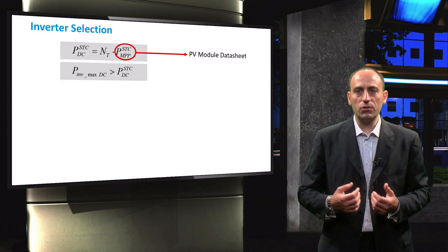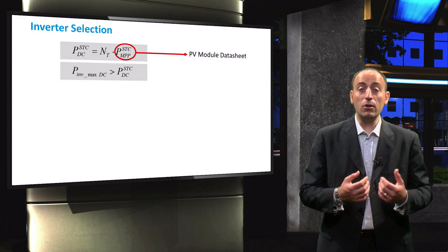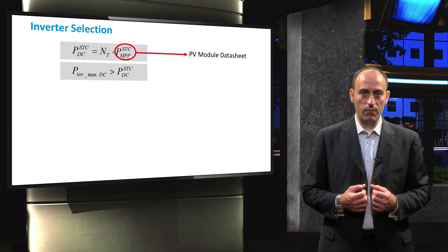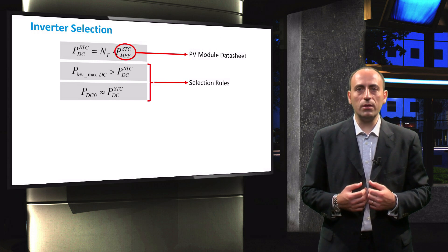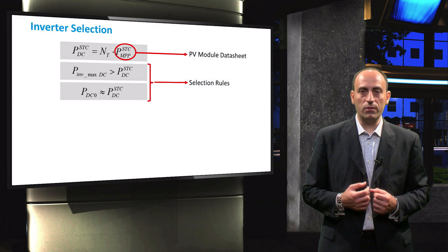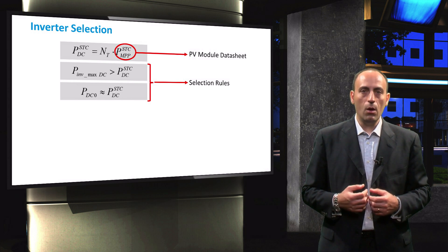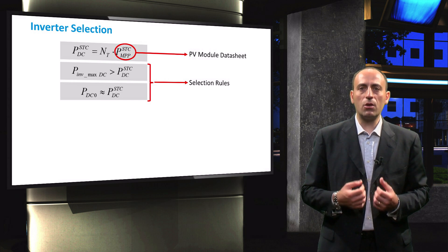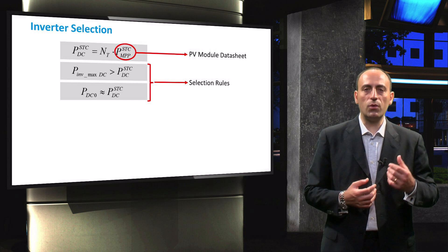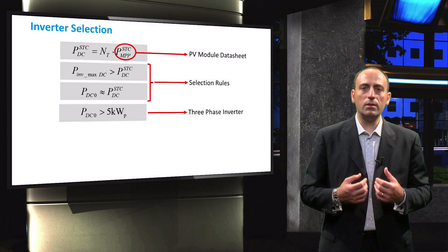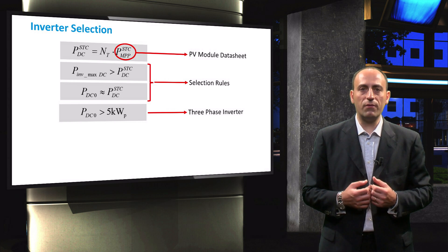The maximum DC power output of the modules should not exceed the maximum allowed DC input of the inverter. The first selection criterion of the inverter is therefore that the output of the PV modules is within the operational range of the inverter. The second inverter criterion considers the nominal DC power of the inverter, PDC0, which should approximately be equal to the PV output power.